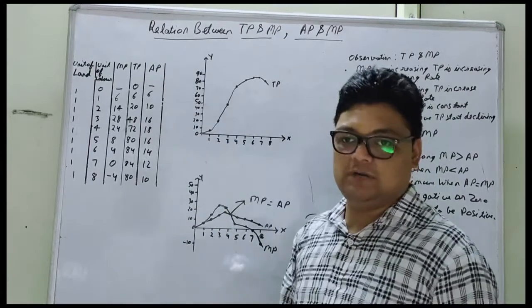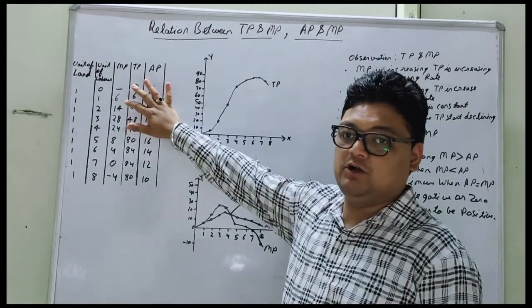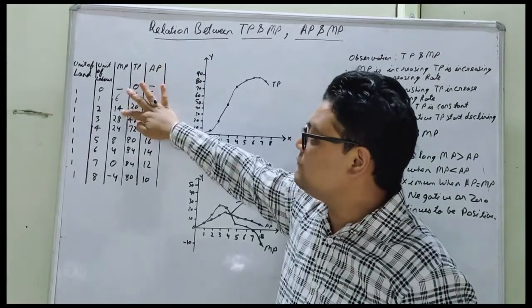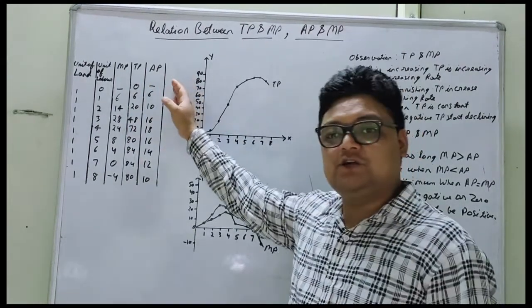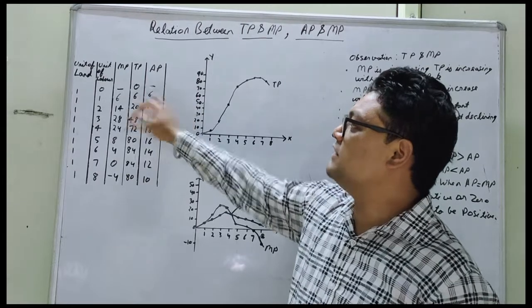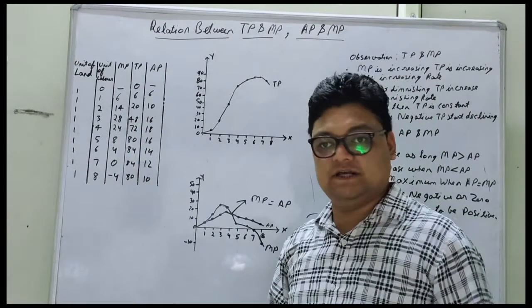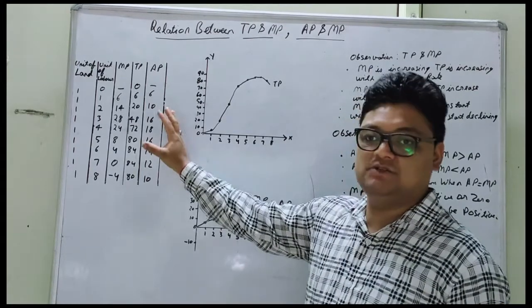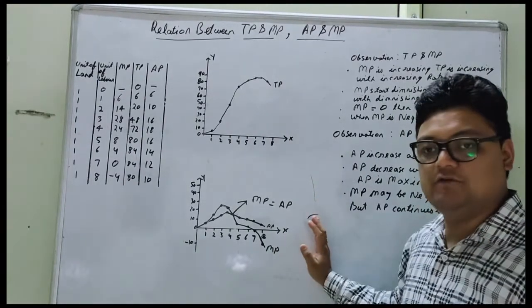Now you have to calculate total product. The first entry will be a dash. Then from MP we calculate total product by adding upwards: the first is 6, then 14 plus 6 equals 20, then 28 plus 20 equals 48, and so on like this. For average product, the formula is total product divided by labor. So 6 divided by 1 is 6, 20 divided by 2 is 10, 48 divided by 3 is 16, and so on. After making this table, you have to plot this data into a graph.